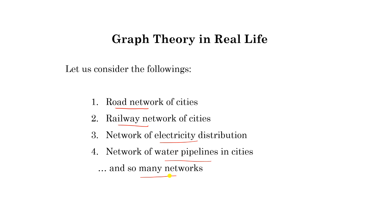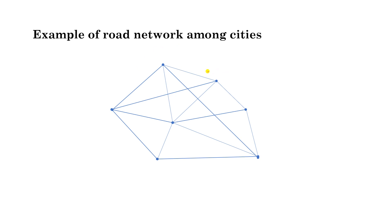So many real-life problems can be converted into graph theory and we can find the solution also. Now look at this network of roads among cities. For example, these are various cities — you can name them A, B, C, D, E, F, and G. If there is a road between two cities, you join them with a straight line to form a network. If you have to move from A to C, there are more than one ways — for example A-B-C, or directly A-C, or A-G-C.